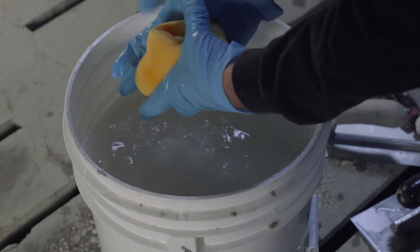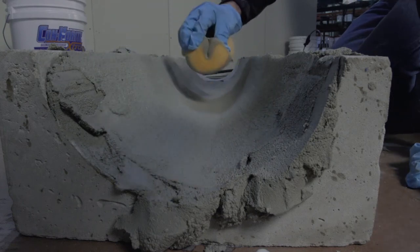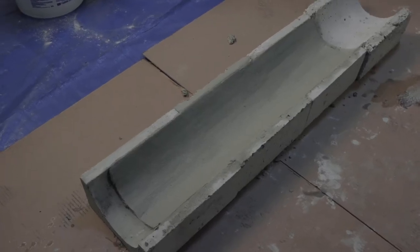You may want to use a round end trowel to eliminate ridges and trowel marks. After about 15 minutes, use a damp but not dripping wet grout sponge to finish smoothing the surface of the trough. Your trough repair is now complete.